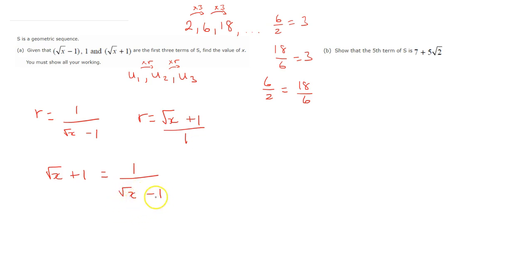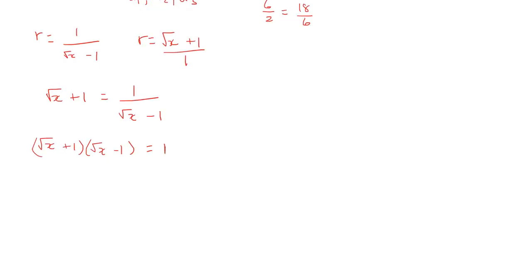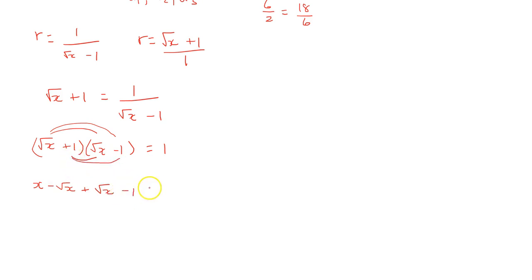Solving for x: multiplying both sides by (root x minus 1) gives (root x plus 1)(root x minus 1) equals 1. This is a difference of two squares. Expanding: root x times root x is x, root x times minus 1 is minus root x, 1 times root x is plus root x, and 1 times minus 1 is minus 1. The minus root x and plus root x cancel, leaving x minus 1 equals 1, therefore x equals 2.